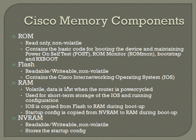NVRAM is readable, writable, and non-volatile — much like flash. It is where the startup configuration is located. If you make a change in a Cisco router but do not write to memory, it's going to make those changes to the running configuration, but without saving it won't save them to the startup configuration that gets reloaded whenever you reboot the box.